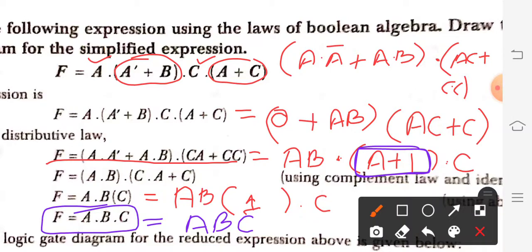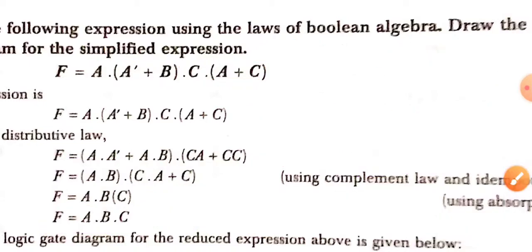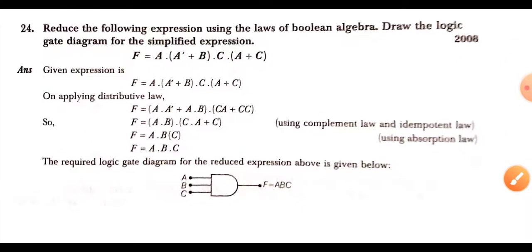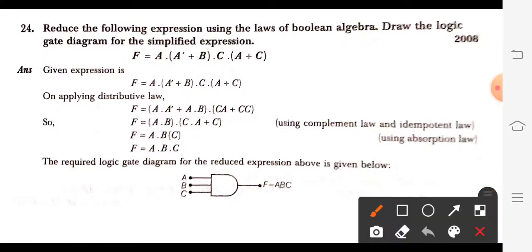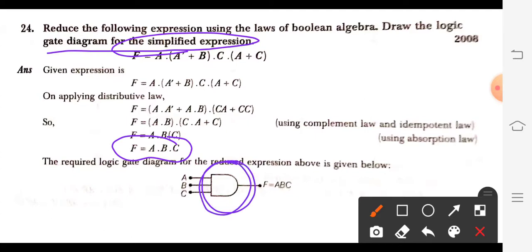After getting this simplified expression, we need to make the logic diagram for the simplified expression A·B·C. To show the AND operation we use the AND gate. So this is your logic diagram for A·B·C.